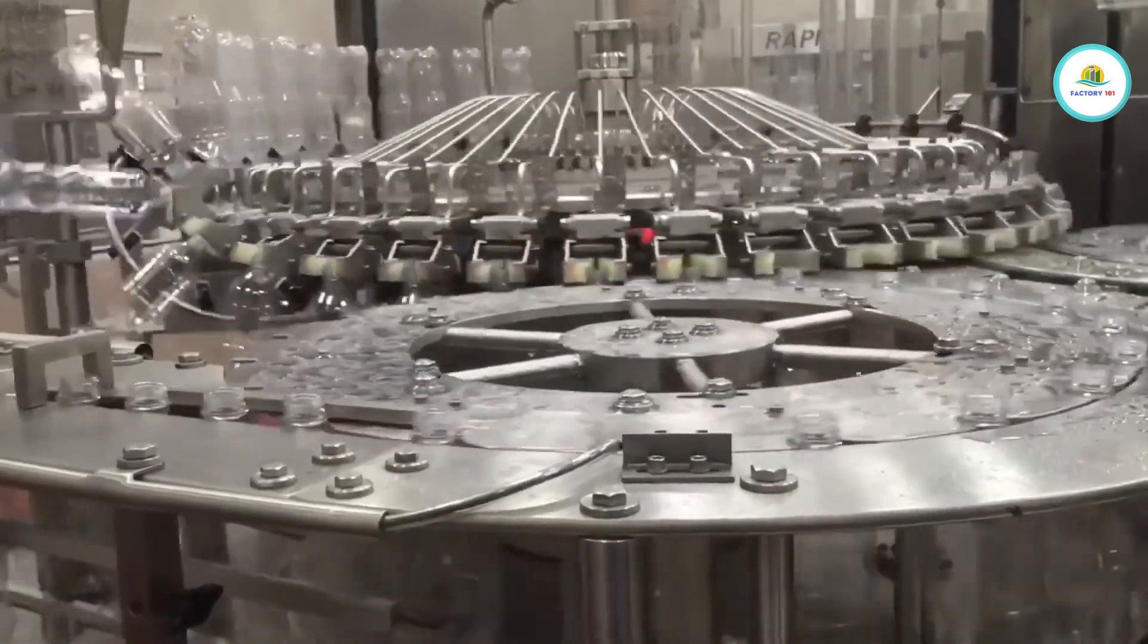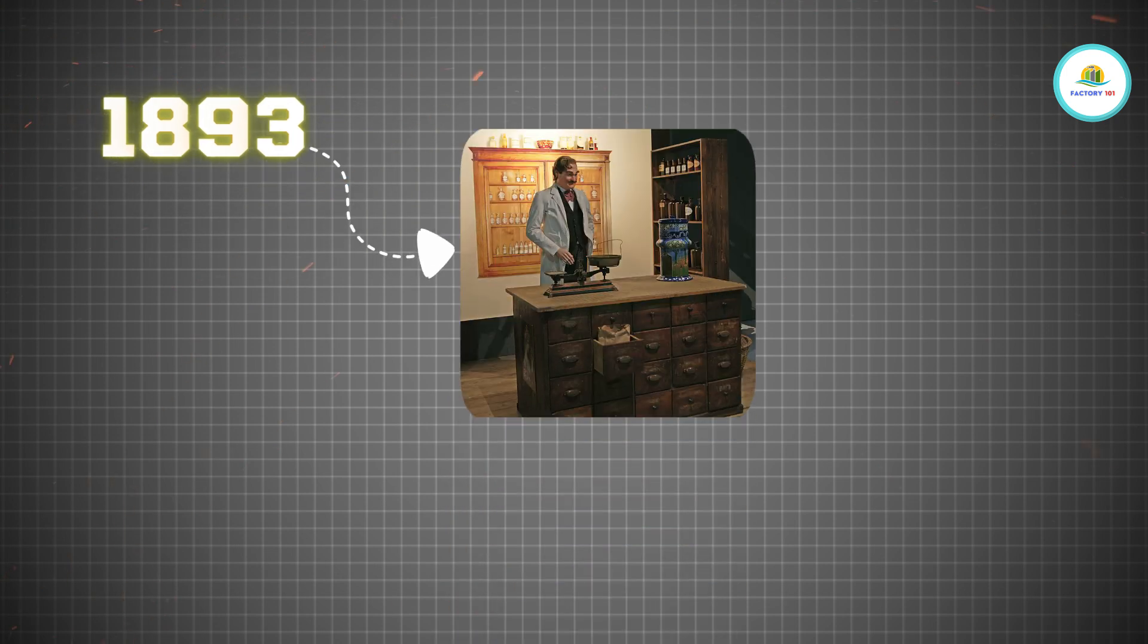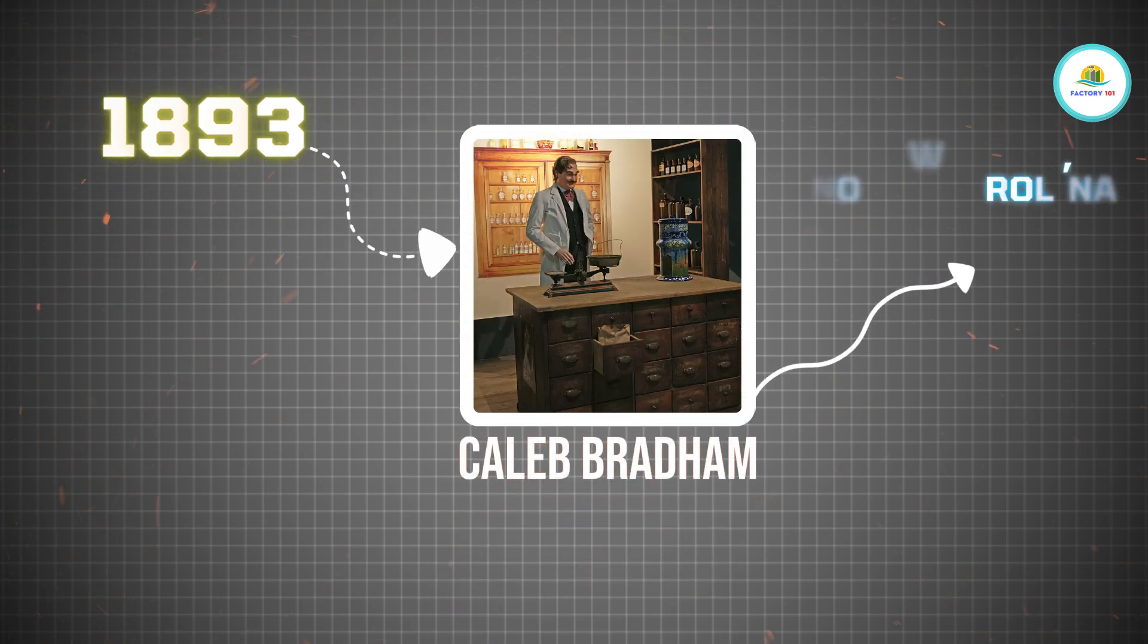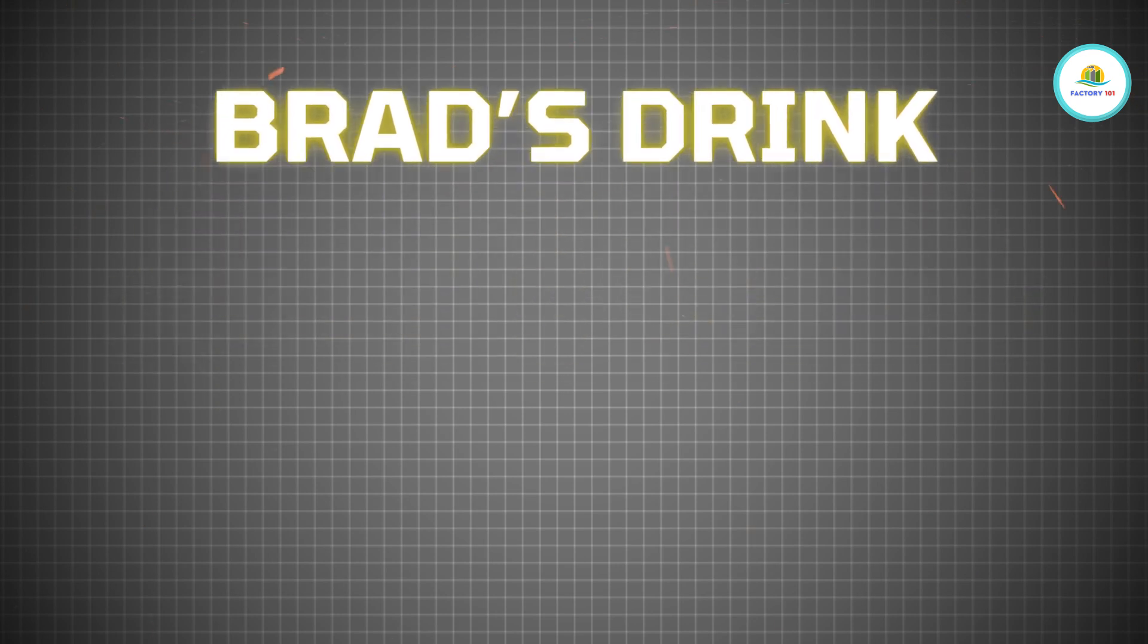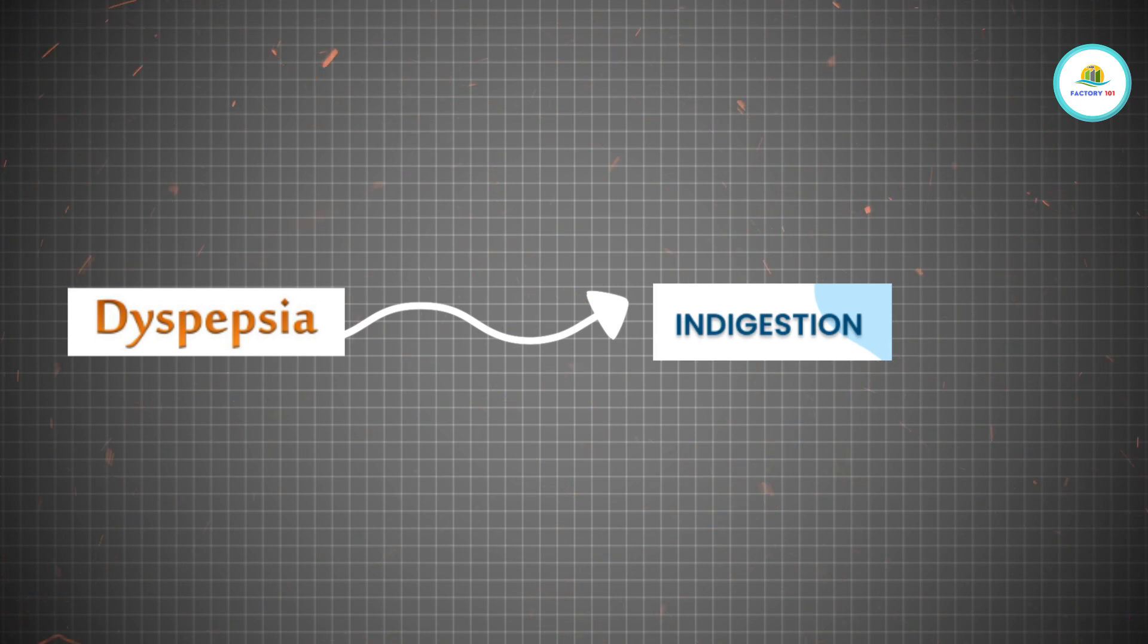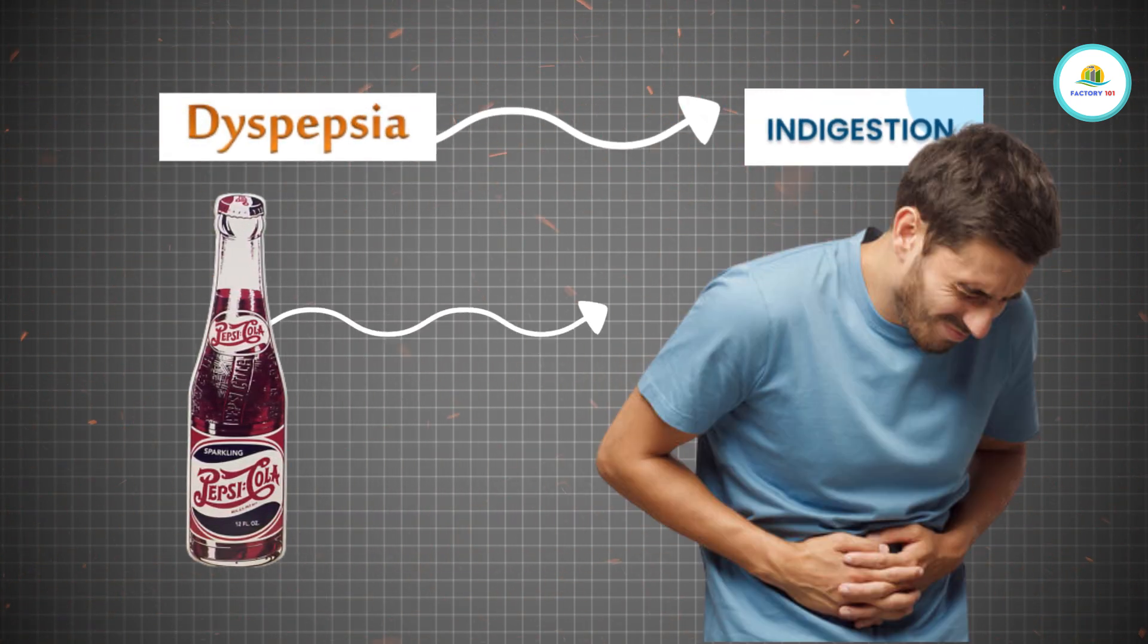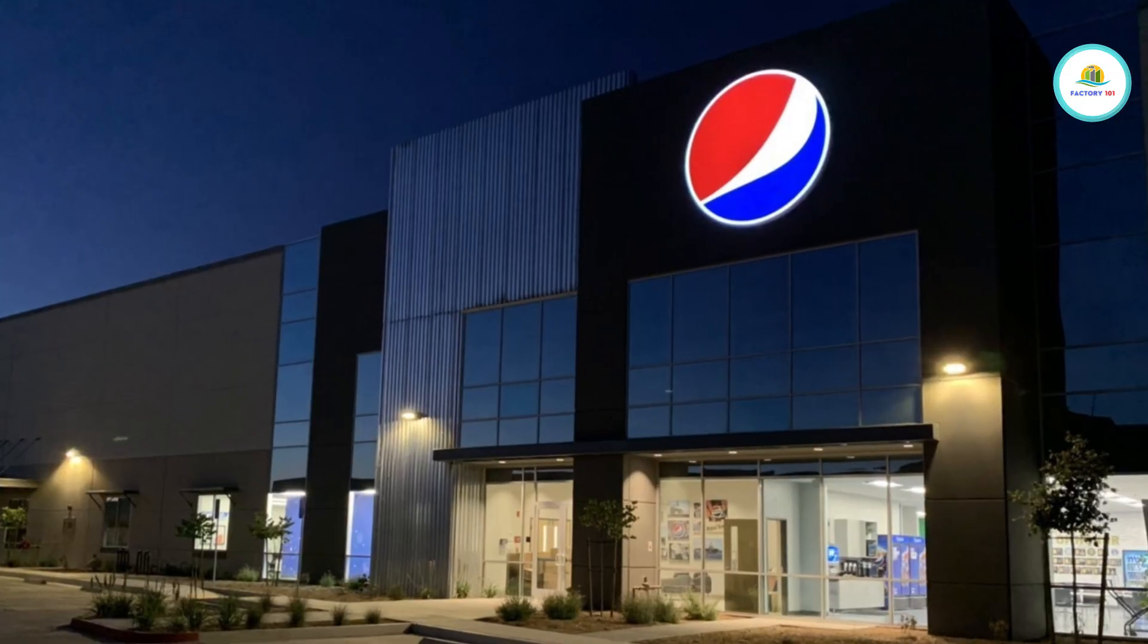Before we dive into tanks, tubes, and robots, let's rewind a bit. It all started in 1893 with a pharmacist named Caleb Bradham in New Bern, North Carolina. Originally called Brad's Drink, it was created to aid digestion. But in 1898, Bradham renamed it to Pepsi Cola, inspired by the word dyspepsia, which means indigestion. Yup, Pepsi was basically stomach medicine that became a billion-dollar soda empire.